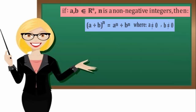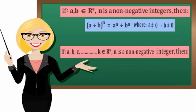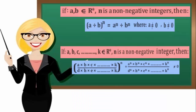In general, if A, B, C, till K belong to R star, and N is a non-negative integer, then A times B times C till K over D times H times E till K, all to the power N, equals A to the power N times B to the power N times C to the power N till K to the power N, over D to the power N times H to the power N times E to the power N till K to the power N, which is not equal to 0.